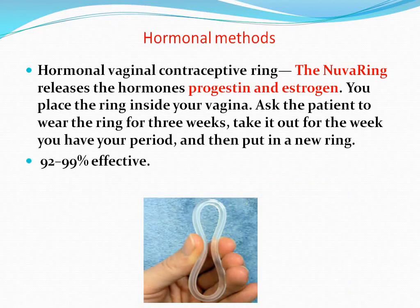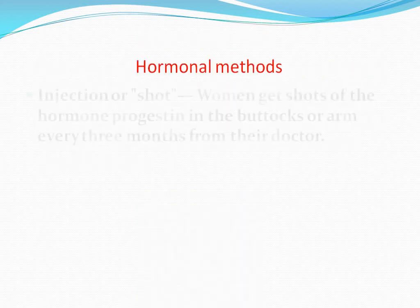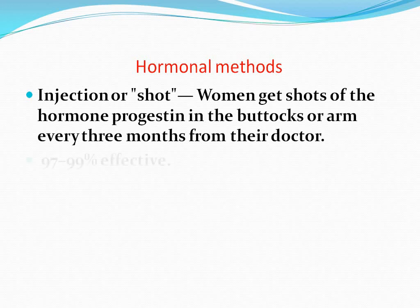Hormonal methods include the hormonal vaginal contraceptive ring. The ring releases the hormones progesterone and estrogen. You place the ring inside your vagina and wear it for 3 weeks, then take it out for one week to have your period, and then put in a new ring. It is 92 to 99% effective.